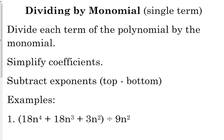Dividing by a monomial - monomial means a single term, mono one. What we're going to do is divide each term of the polynomial, poly meaning many, the many terms expression by the monomial. You're going to simplify your coefficients. You're going to subtract your exponents, and when you do that, it's the top exponent minus the bottom exponent.